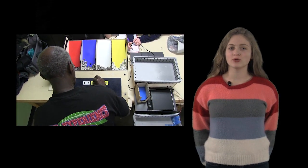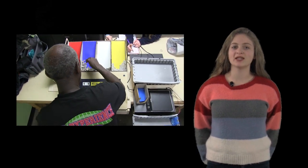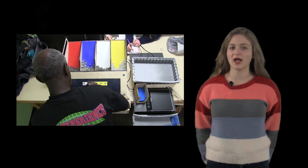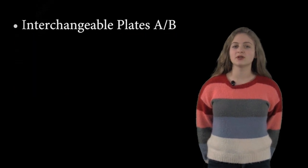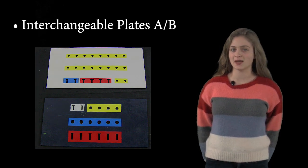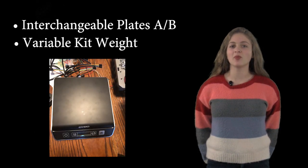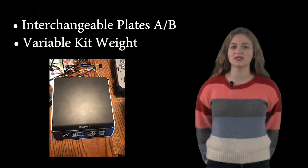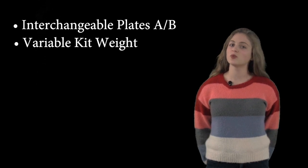Our scale along with our screw sorter were designed with the vision of the device being used far into the future at ProPack. The screw sorter features interchangeable plates making it easy to switch from assembling kit A to kit B without wasting time. The scale easily accommodates variable kit weights simply by pressing a button labeled with the kit the user wishes to assemble.